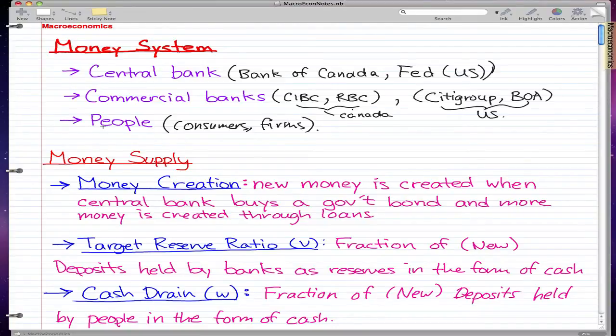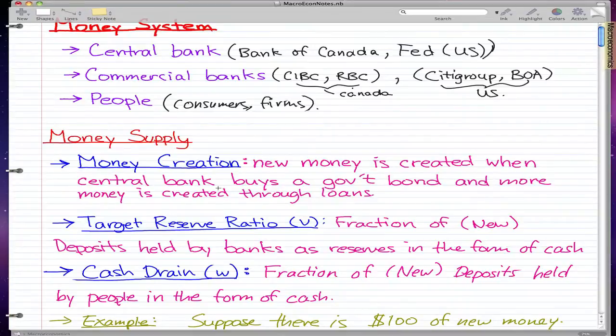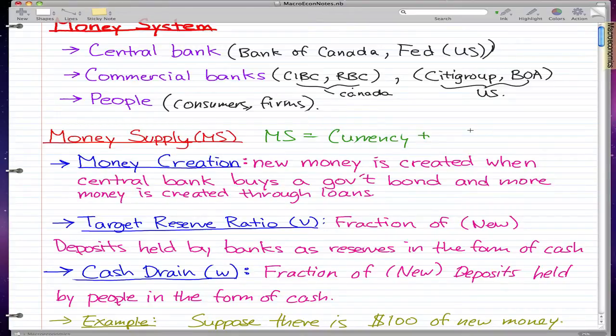Now I have here three definitions that I really want you to know. But before that, I should tell you what money supply actually is. Money supply (MS) is simply a formula: MS equals currency plus deposits. And currency is basically the cash, and deposits is, I guess you can say, the cash used for loans.